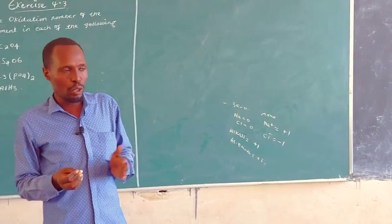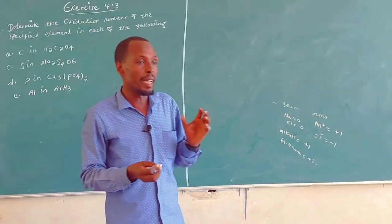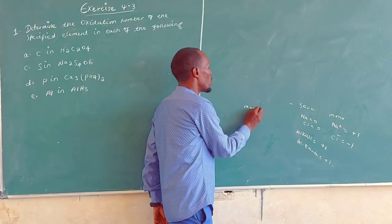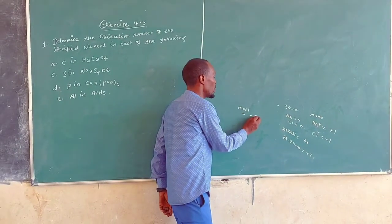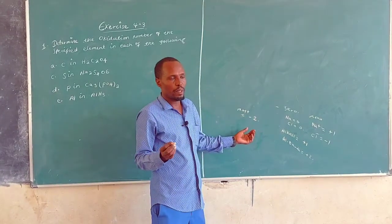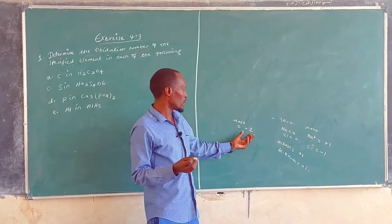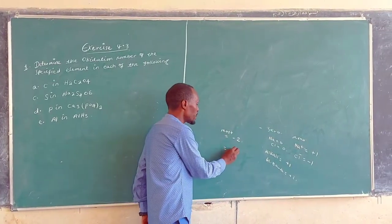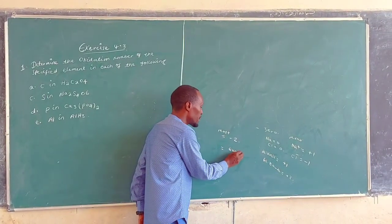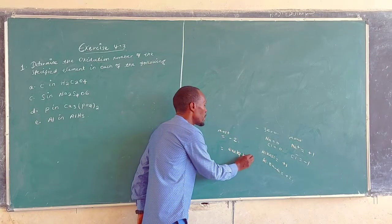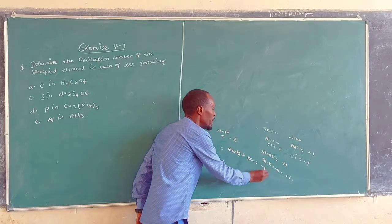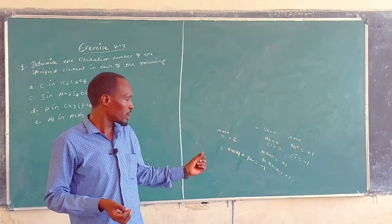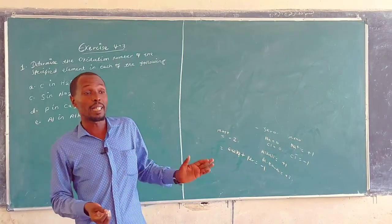The oxidation number of oxygen in most of its compounds is minus two, except in peroxides where it is minus one, and in superoxides it is also minus one.